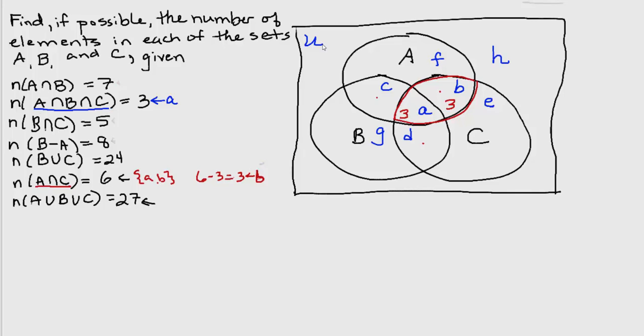In fact, any of the intersections will help us in this way. Here's another one. A intersect B has seven elements. Let's identify A intersect B on our diagram. I'm going to outline it in green so we can see.